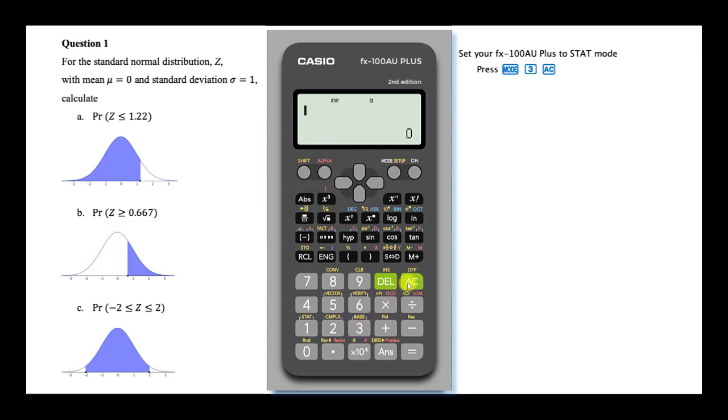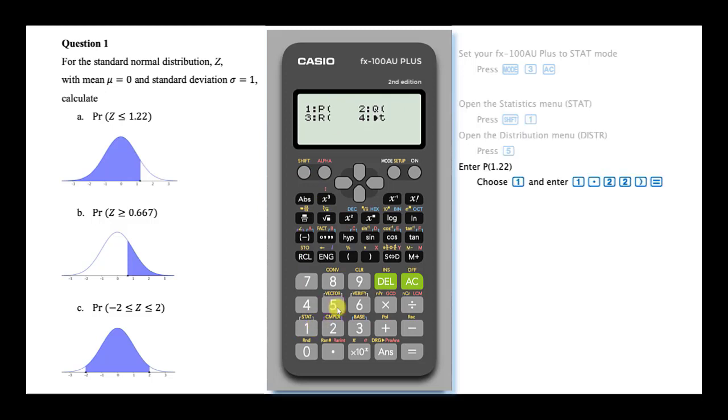To perform our first calculation, open the statistics menu by pressing shift and then 1. Open the distribution menu by choosing 5. To choose a P calculation, press 1. Enter the Z value, 1.22. Close the brackets and press equals.